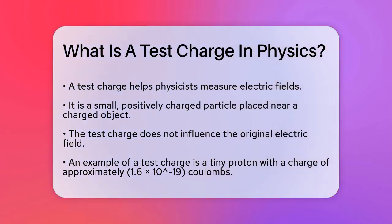Imagine you have a charged object, like a sphere with a positive charge. To understand the electric field around this sphere, you need to know two things: the direction of the electric field and its strength.